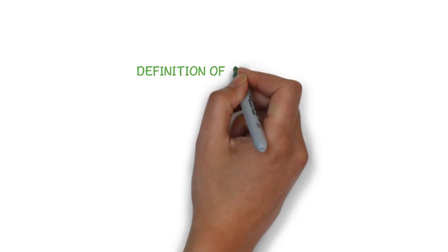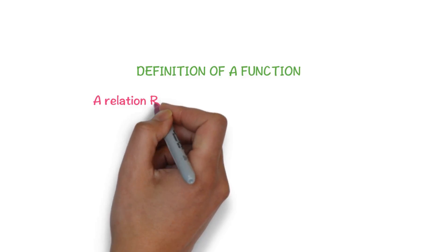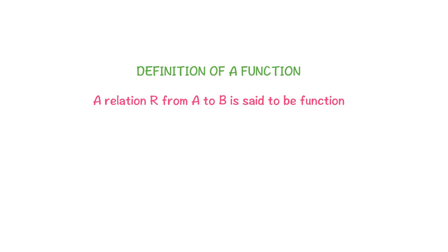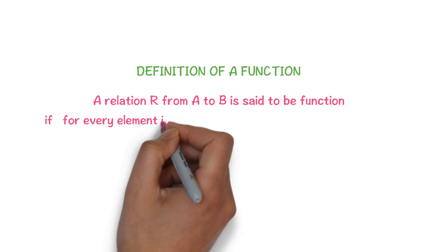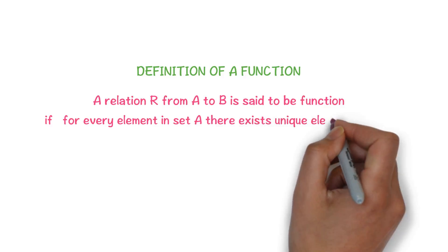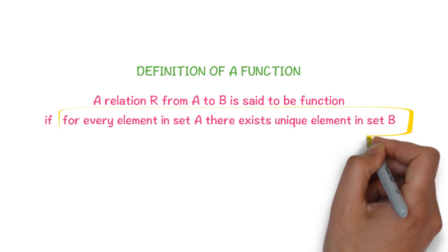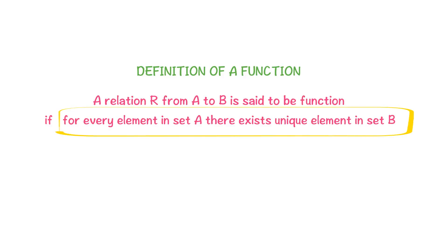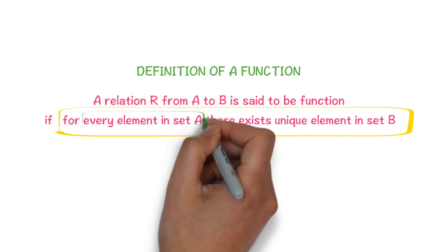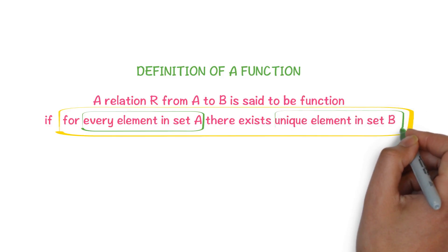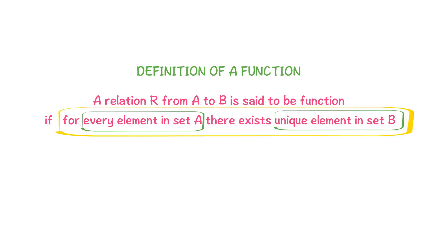Definition of a function. A relation R from A to B is said to be a function if for every element in set A, there exists a unique element in set B. If the relation R satisfies this condition, then we say R is a function. Unique element means only one element.